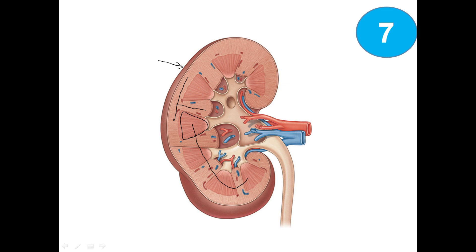We have the minor calyx, the major calyx, and the renal pelvis. We also have the renal artery, the renal vein, and the ureter. This hollow space is known as the renal sinus.